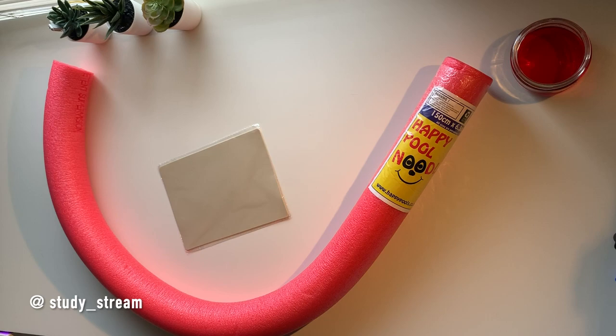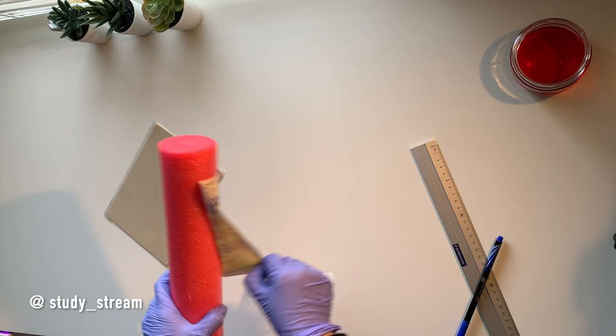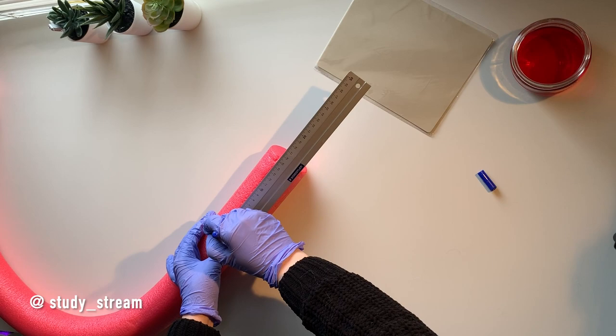To make the base, cut the foam noodle to the desired size. I cut mine to the same length as the tattoo fake skin to ensure good coverage. The length of the simulator model shown in this video is 15 centimeters.